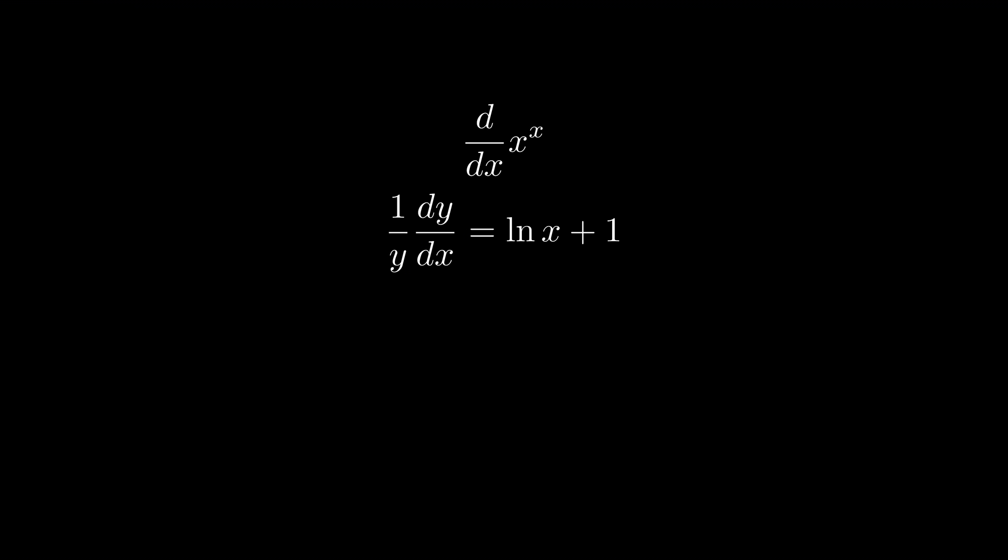So on the left hand side we have 1 over y dy dx. On the right hand side we have log x plus 1. Replacing y with x to the power of x, we have our final result.